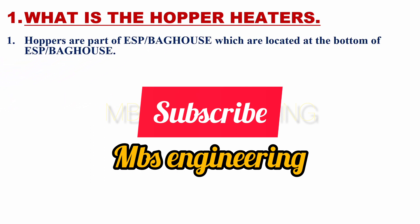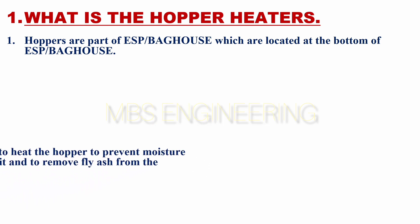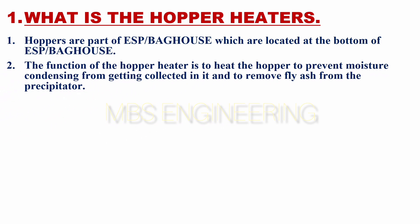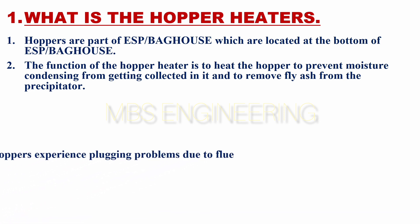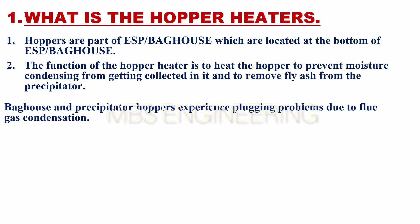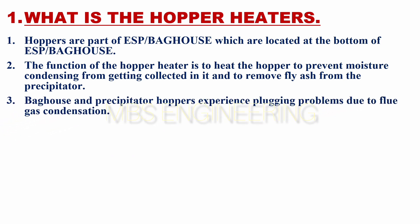We learn about what are the hopper heaters. Hoppers are part of the ESP bag house, which are located at the bottom of the ESP bag house. The function of the hopper heater is to heat the hopper to prevent moisture condensing from getting collected in it and to remove fly ash from the precipitator.